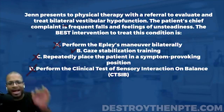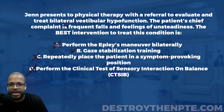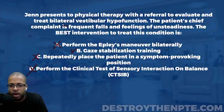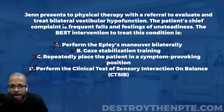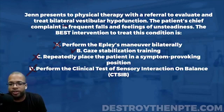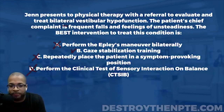For those who got this correct, congratulations — the vestibular system is not an easy one. You have to understand the different pathologies: bilateral vestibular hypofunction, BPPV, unilateral vestibular hypofunction — and know the appropriate interventions for each. My recommendation: don't try to learn the entire vestibular system at once. Start with BPPV, get a solid understanding, then move to Meniere's disease, then bilateral vestibular hypofunction and its interventions.